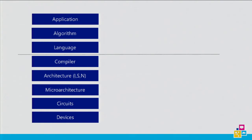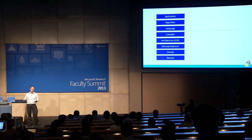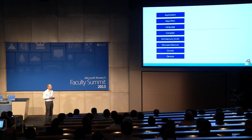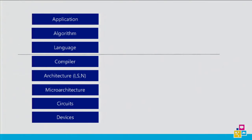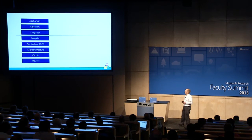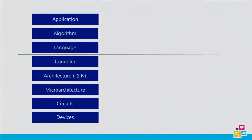We have the standard computing stack. We start at the bottom with devices — I mean silicon devices, transistors, memory cells, and whatnot. We're a devices and services company, but in that sense Microsoft means the other kind of devices. Then you build circuits out of devices, then you have microarchitecture, which is logic architecture on that. ISA means instruction set architecture, systems architecture, and networks. And then on top of that you compile down to them, and of course there's a boundary that programmers typically use to write programs to this underlying stack.